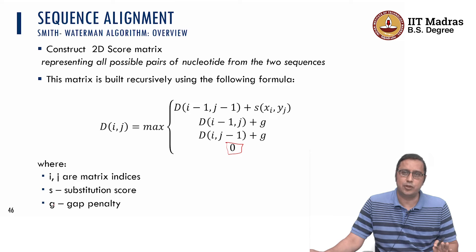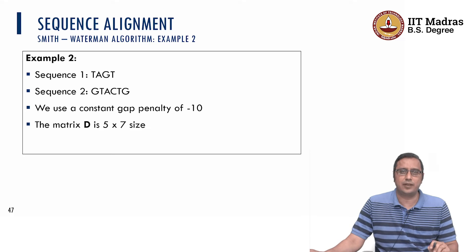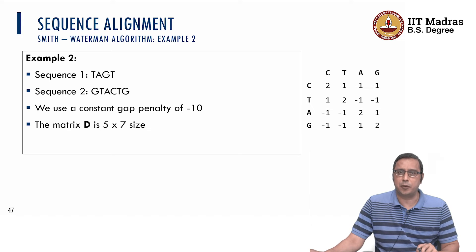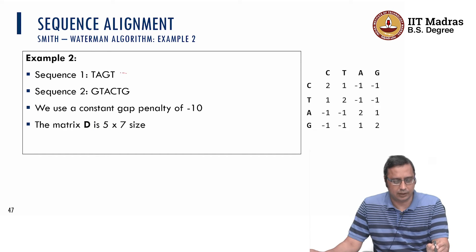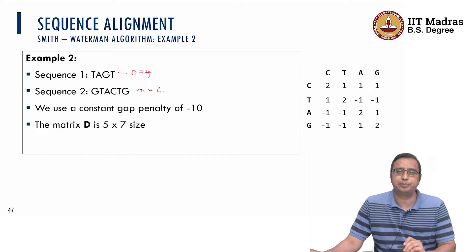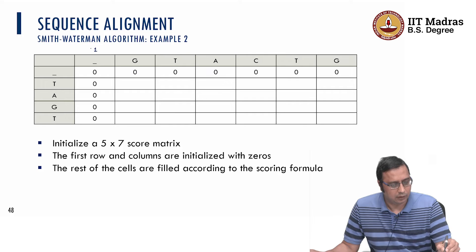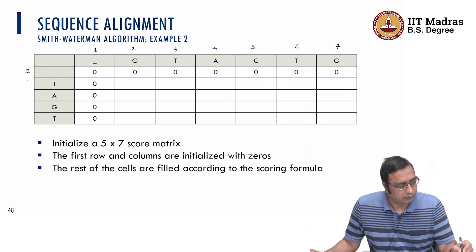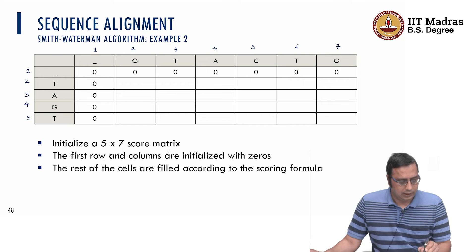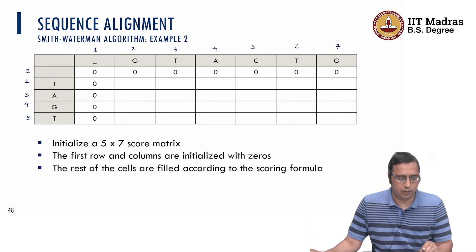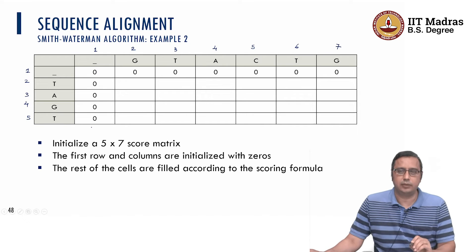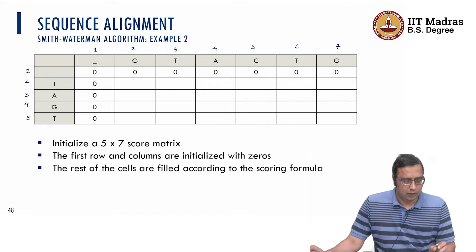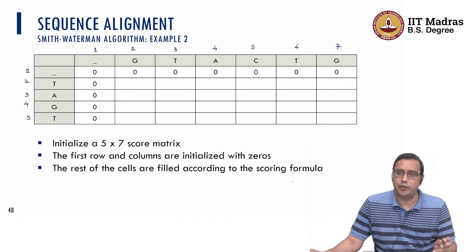Here again, for the example we use a constant gap penalty. Going back to example 2 with this particular scoring scheme, the scoring matrix is going to be the same size of 5×7 because N equals 4 and M equals 6. We initialize the 5×7 matrix with 0s in the first row and columns — we do not give any negative gap values at all — and the rest of the cells are filled according to the formula we discussed.